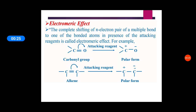What is electromeric effect? The complete shifting of pi electron pair of a multiple bond to one of the bonded atoms in presence of attacking reagent is called electromeric effect. Here a carbonyl group example is shown: C double bond O. Among that, one is sigma bond, another one is pi bond. In presence of attacking reagent, these pi electron pairs are shifted to one of the atoms.